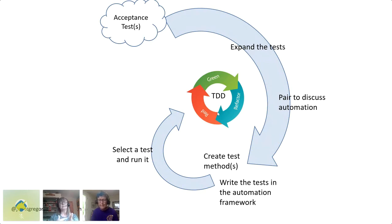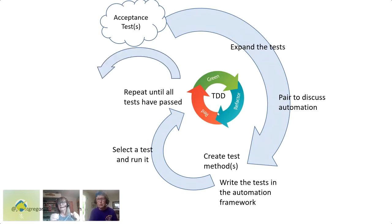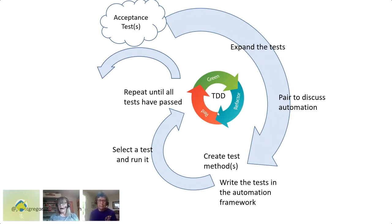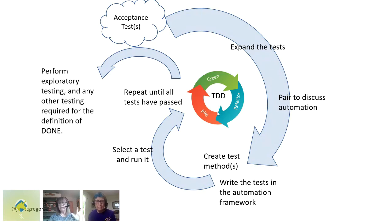They do that again and again until the happy path test passes, then select another acceptance test — an example of a misbehavior — and repeat until all tests have passed. At the end of that coding cycle, we have automation at the unit level, automation at the API level, and we know that particular story does what we thought it should. The automation is almost a side effect of the process.